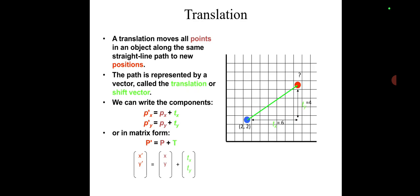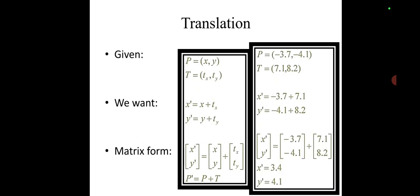Let us consider another example. We have point P at (-3.7, -4.1). The translation scale we are given is 7.1 and 8.2. The new vertices of the given point will be: x' = -3.7 + 7.1 = 3.4, and y' = -4.1 + 8.2 = 4.1. So the new coordinates we are getting are (3.4, 4.1).